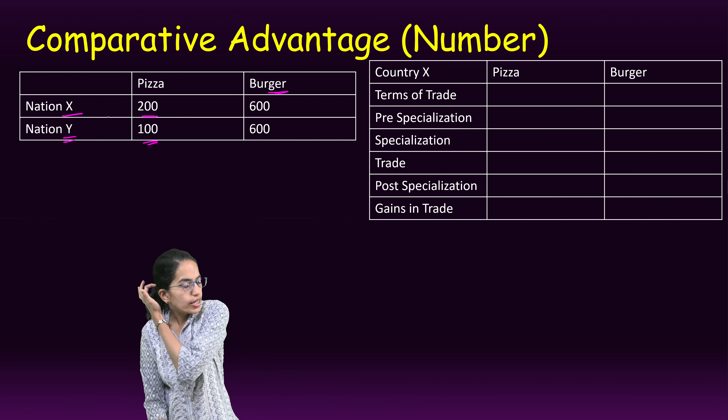There are 200 pizzas being produced by nation X and nation Y producing 100 pizzas. However when it comes to burgers, both of them produce 600 burgers. Now the question is really important.